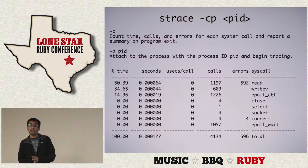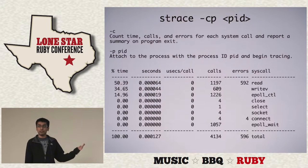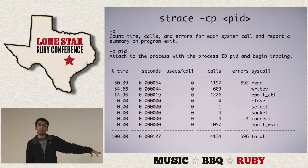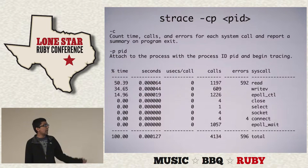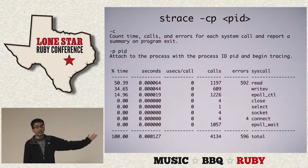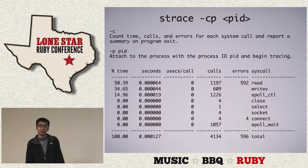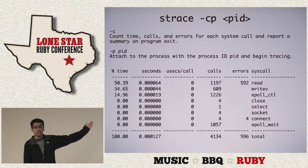There are two ways I like to run strace. One is summary mode with the -c flag. You attach, run it for a while, then Control-C, and it prints a summary of what happened — what system calls were called most often and where you're spending the most time. This is pretty typical for any web application doing a lot of reads and writes. In this example, 50% of the time was spent reading from different sockets.